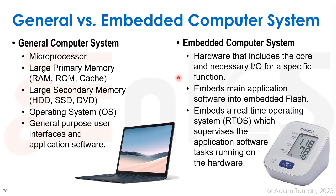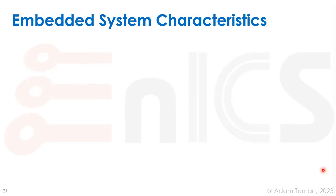An embedded computer system, on the other hand, includes only the hardware and core I/O necessary for a specific function — such as a medical monitor. It embeds the main application software into embedded flash, using a read-only memory type arrangement to hold the program running continuously, rather than loading from a hard disk into main memory. It will either have a real-time operating system supervising the application software, or it will run bare metal without any operating system.